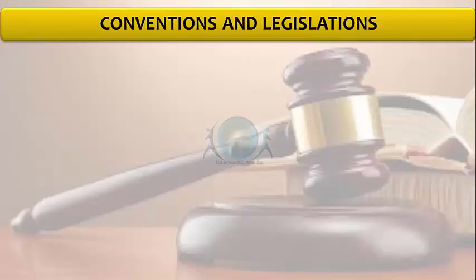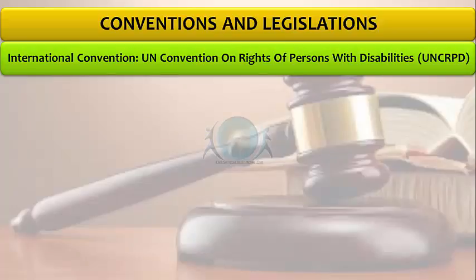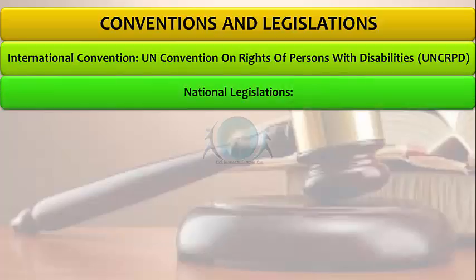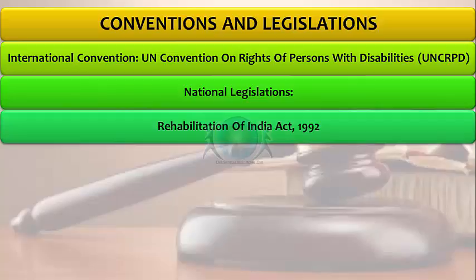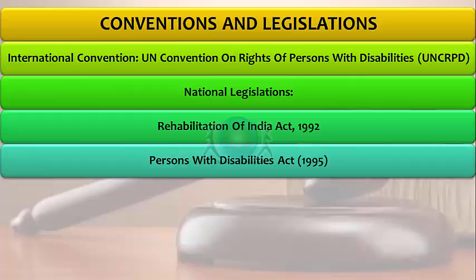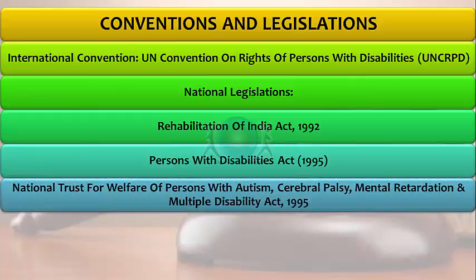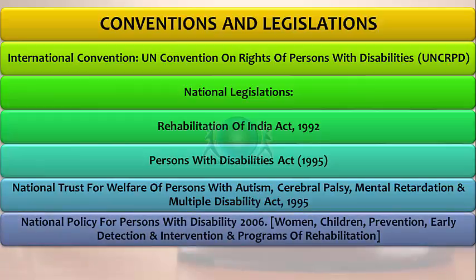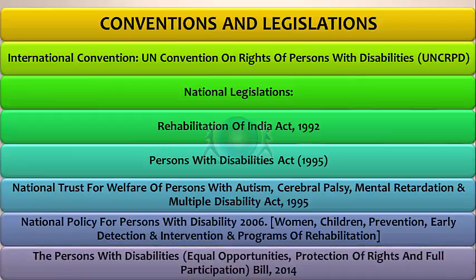There have been many conventions and legislations regarding persons with disabilities across the world, attempting to address their problems in various forums. There is the UN Convention on Rights of Persons with Disabilities. In India, there have been many legislations: the Rehabilitation Council of India Act of 1992, the Persons with Disabilities Act of 1995, the National Trust for Welfare of Persons with Autism, Cerebral Palsy, Mental Retardation and Multiple Disabilities Act of 1995, and the National Policy for Persons with Disabilities 2006, which has specific provisions for women, children, prevention, early detection and intervention, and rehabilitation programs. There is also the Persons with Disabilities (Equal Opportunities, Protection of Rights and Full Participation) Bill of 2014.